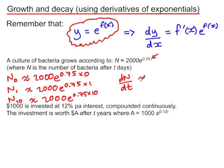That's found by differentiating N with respect to t. And because we have an exponential function, remember we multiply by the derivative, so in this case it's 0.75, and we leave the rest of the function unchanged. And this 2000 here is a scalar which is unaffected by differentiating.